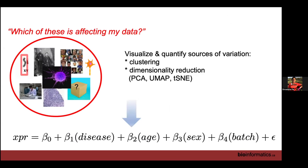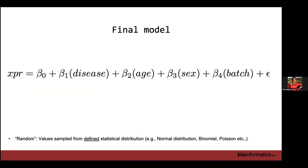There are things you know and things you don't know that are in your data. We're going to talk about some tools to help you visualize and quantify some of these sources of variation — including clustering, which we're talking about this morning, and dimensionality reduction, which I'll talk about this afternoon. At the end of this process, you will have identified sources of variation in your data. Now your model is more enlightened: expression is a function of disease, but also needs to take into account age, sex, batch effect, and then whatever is leftover residual.